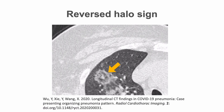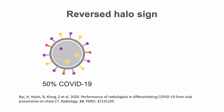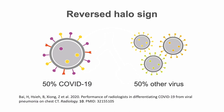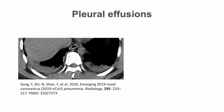The reversed halo sign, or atoll sign, is another finding reported in some patients with COVID-19. It reflects a peripheral dense consolidation surrounding a central, less dense ground glass appearance in the same region. This sign was mostly described in patients with organising pneumonia. Interestingly, in a study of over 400 cases — half with COVID-19 and the other half with other viral pneumonias — the reversed halo sign was found to be one of the differentiating signs seen mostly in patients with COVID-19 pneumonia.